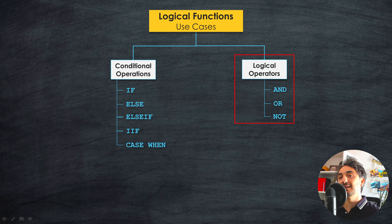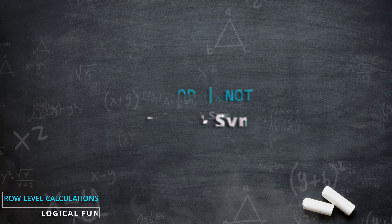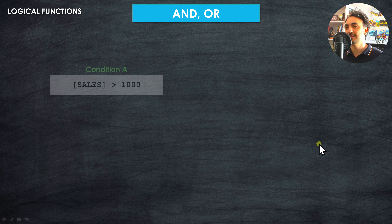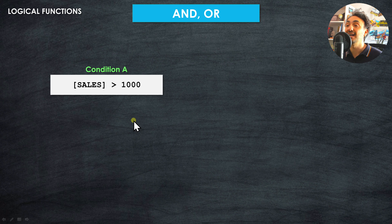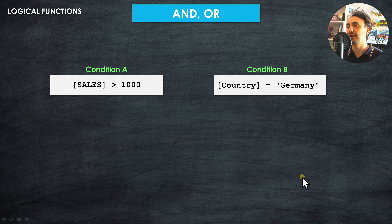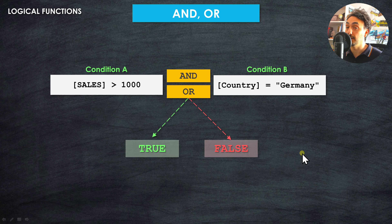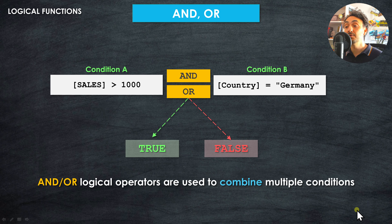Now we're going to learn how to evaluate multiple conditions in Tableau using the logical operators AND and OR. Then we're going to learn about the NOT operator. Let's understand the concept first, then practice. So let's start with the AND and OR operators. These are logical operators used to combine multiple conditions, and the output is a boolean true or false.